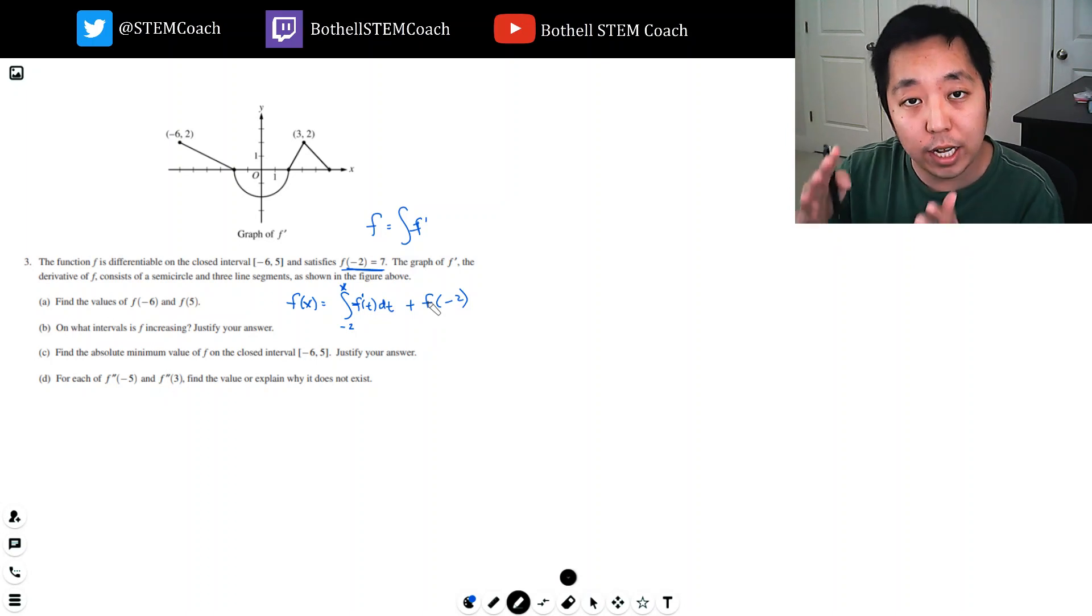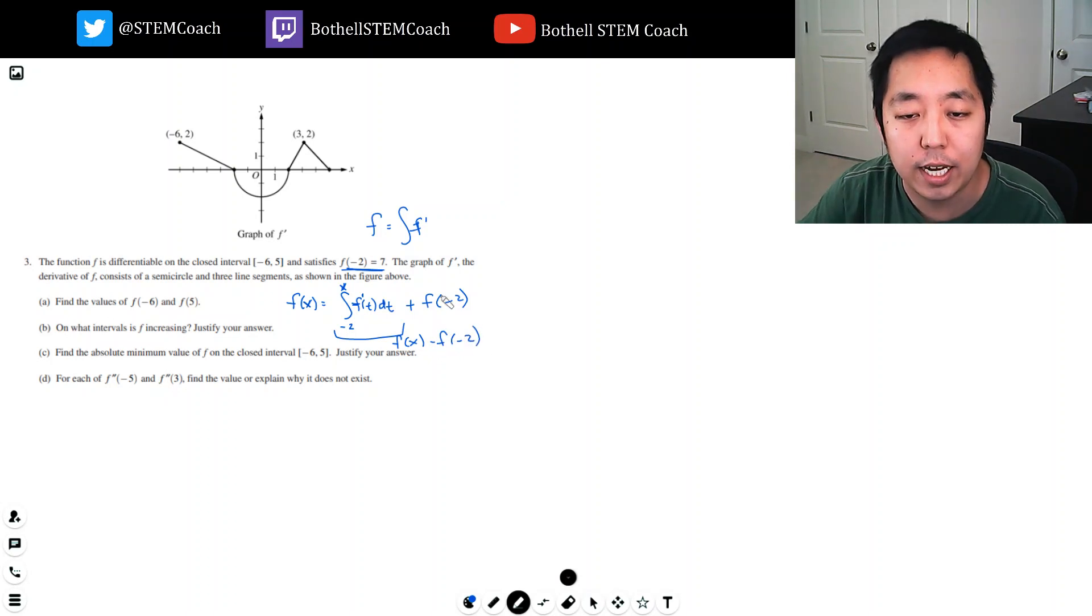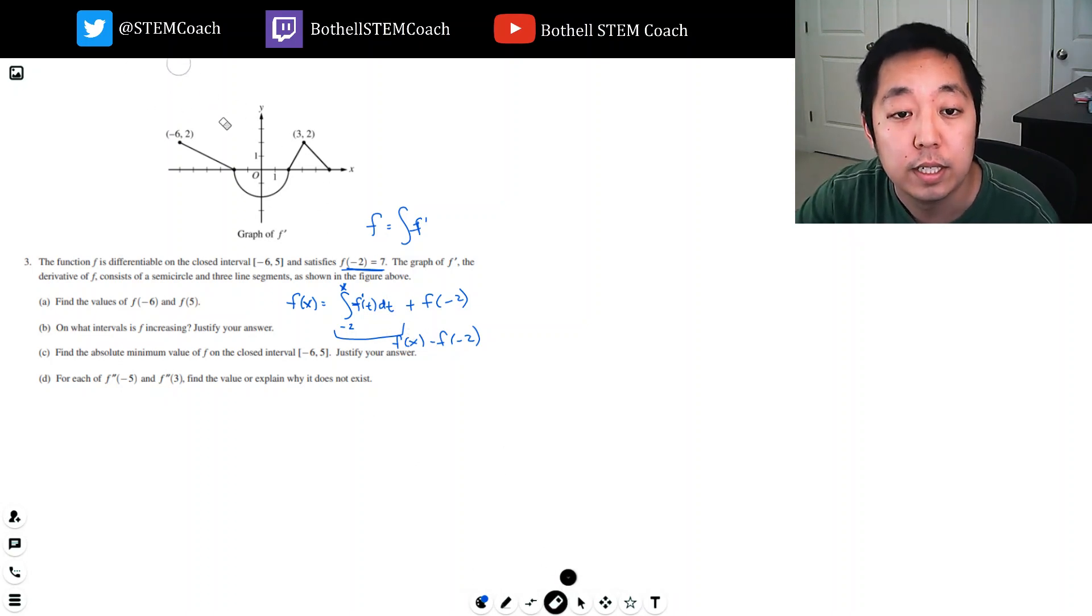It's like we start at negative two at seven and then we add up the relative areas under the curve to show what the change would be. Because the result of this integral here would be f of x minus f of negative two. So I gotta add the f of negative two to sort of get rid of it. By fundamental theorem of calculus, this would be f of x minus f of negative two, so I'm gonna add f of negative two to counteract that. That's the most straightforward way to think about it.